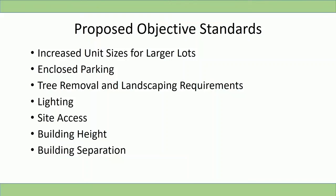While SB9 regulates many development standards for the addition of new units and subdividing lots, it also gives cities the ability to adopt objective design standards to guide development on eligible properties. Objective design standards incorporated into the ordinance include unit sizes, building height and separation, open space and landscaping, and parking. The proposed urgency ordinance would allow larger units, require enclosed parking, require development to follow the city's landscape and tree removal standards, and define allowed site access, maximum building height, and building separation. City council has the discretion to recommend modifications to these objective design standards as part of tonight's motion.